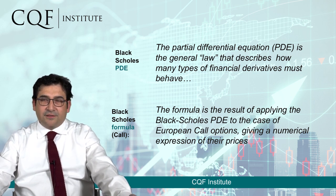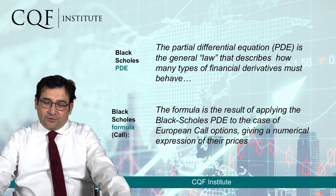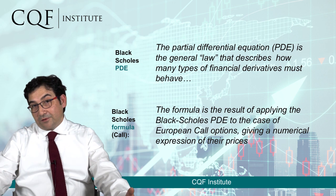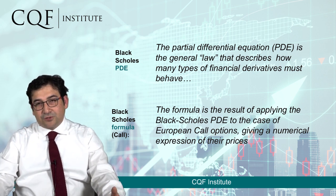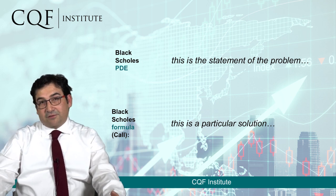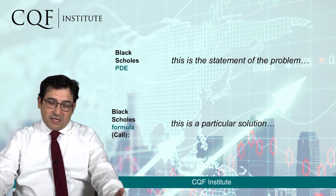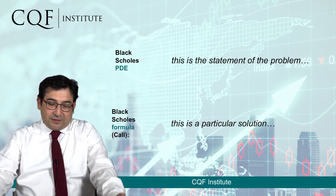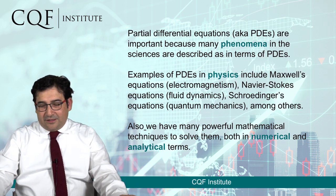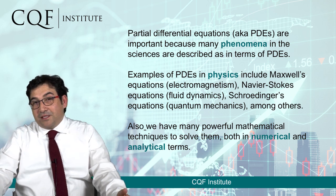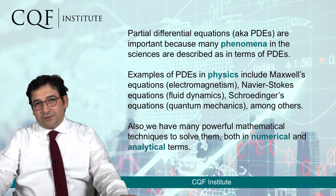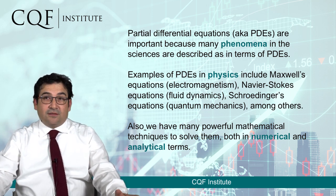The Black-Scholes PDE is very general — it is a way to represent the relationships that the variables describing the contracts should respect. The Black-Scholes PDE is the statement of the problem, whilst the Black-Scholes formula is a particular solution for European-type contracts. But why are we so excited about having a PDE describing what happens to derivatives? One reason is that PDEs are very important in science.